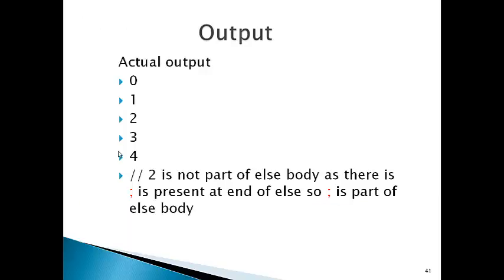So when condition is true: 0 is printed, the if body executes so 1 is printed, the else body (empty statement) is skipped, and 2, 3, 4 are independent and always print. Output is 0, 1, 2, 3, 4. So 2 is not part of else's body because there is a statement terminator after the if condition. This is important.